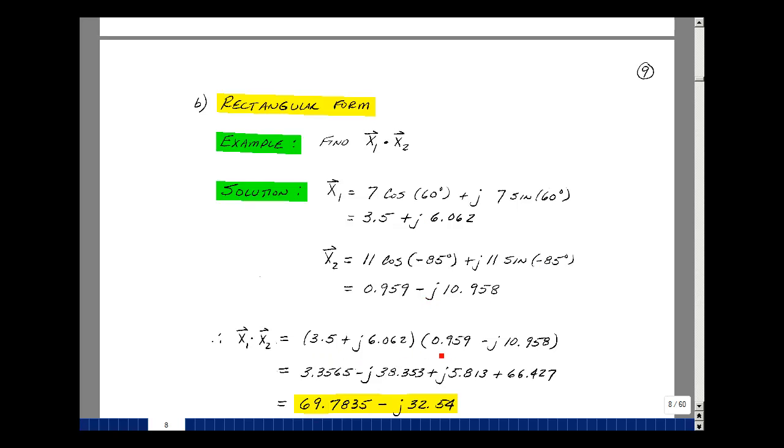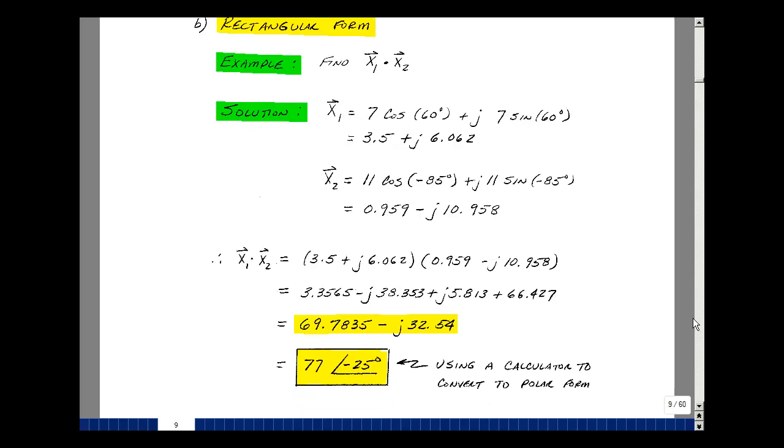So if I multiply these two results, here's the first phasor times the second phasor. So now I've got a lot of algebra to do here. So I'll multiply this times this and get 3.3565, then multiply this times this and get a minus J 38.353, and multiply this times this and get a J 5.813, and then this times this, I get a J squared, which is minus 1. I have another minus sign there, so I get a plus sign. So I'm going to take up the real terms and add them up. So this plus this is 69.7835, and the sum of these two, one's negative and one's positive, get 32.54. I'll just plug this in my calculator. It's basically going to have two inputs and two outputs for your calculator. You'll have to learn how to do those keystrokes on whatever calculator you're using.